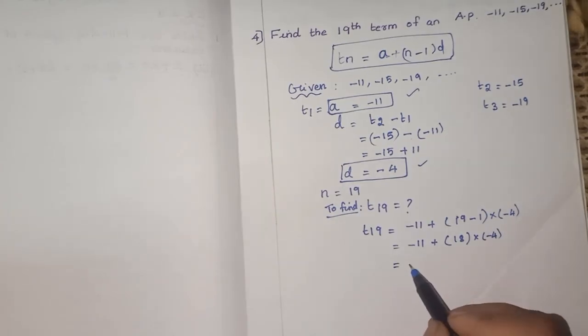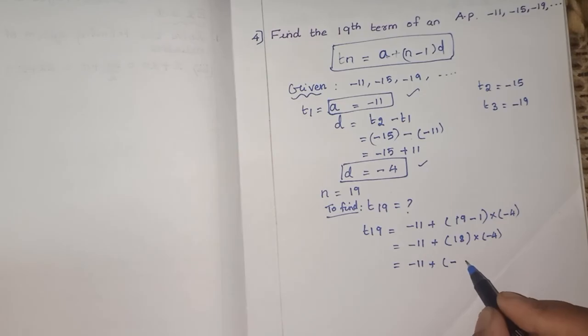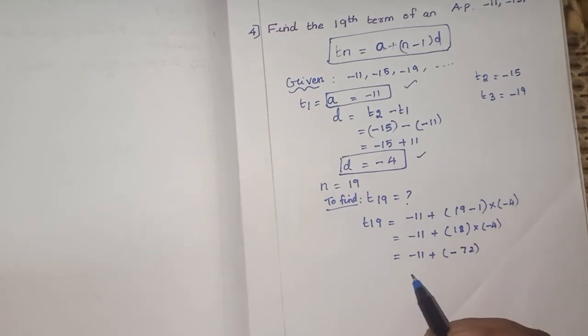We put minus 11. Now you have to multiply both. What is the answer? 18 into minus 4, that is minus 72. Now we have both what? Negative integers. Minus 11 is also a negative integer, minus 72 is also a negative integer.